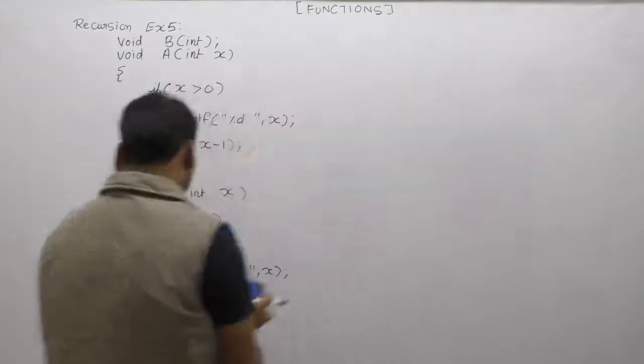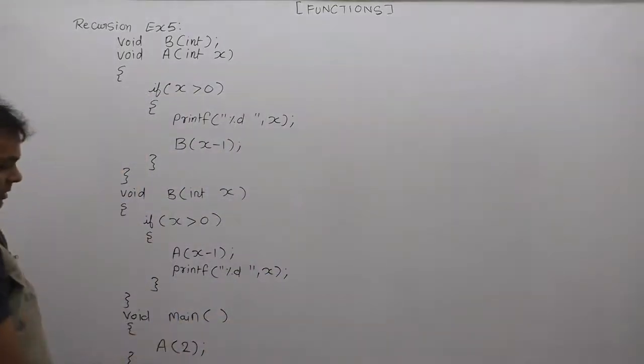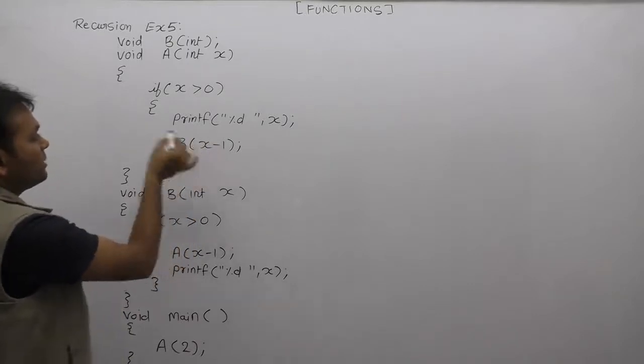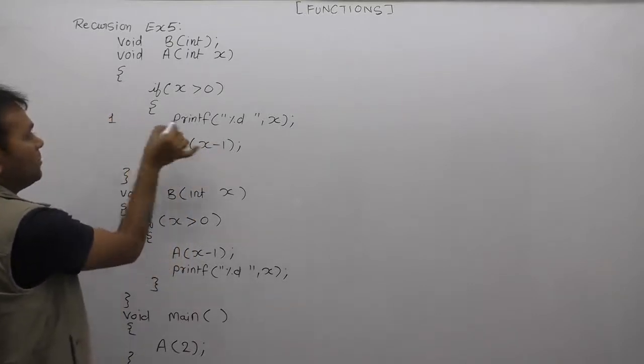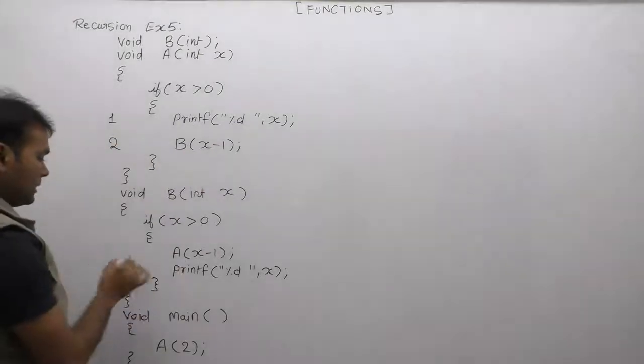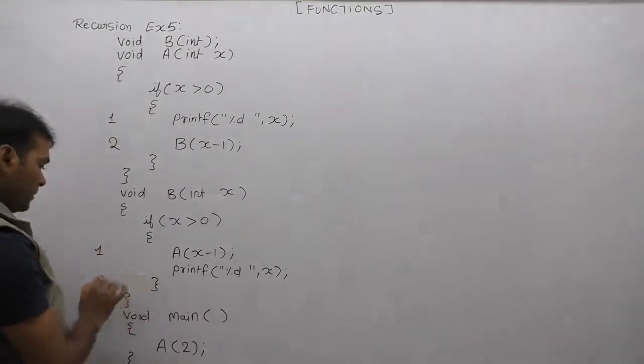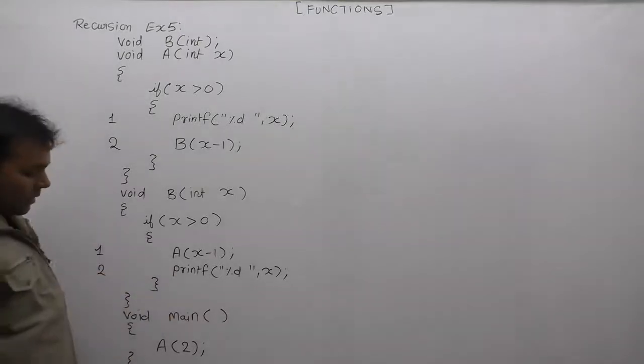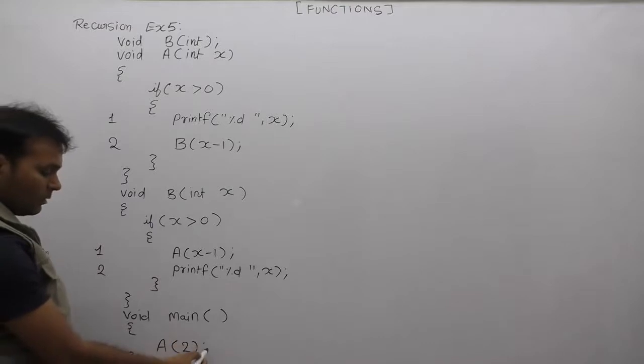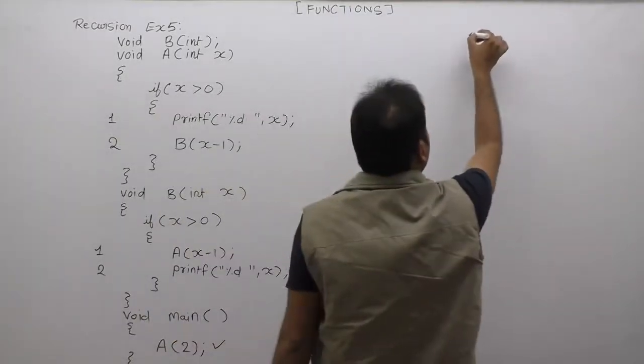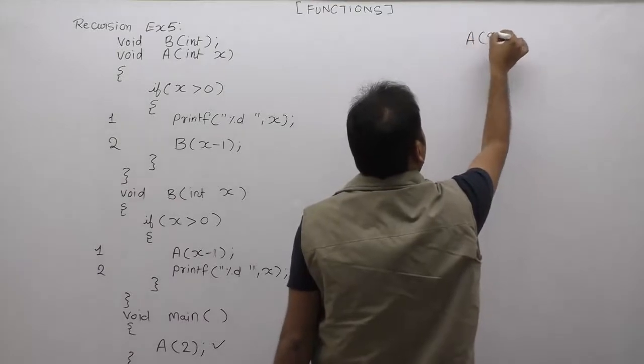How to process it? Start from main function. Again, in this case, in both functions there are two statements. Statement one: printf(x). Statement two: calling B. Same - statement one: calling A, statement two: printf(x). Then how to process it? First, according to main, what call is happening? Function A, function A with argument 2.